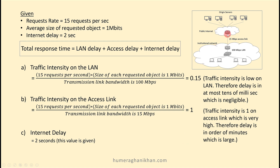For the 15 Mbps access link: 15 requests/sec × 1 Mbps / 15 Mbps gives a traffic intensity of 1, which is very high. Therefore, the delay on this link is on the order of minutes — very large. The internet delay is given as 2 seconds.